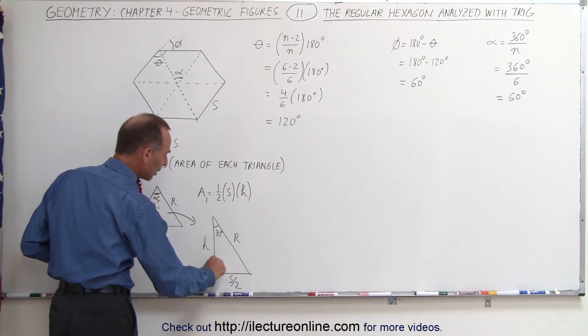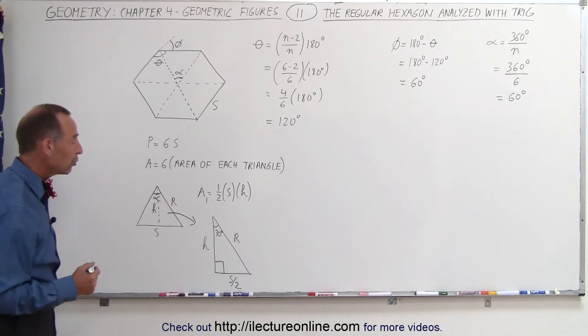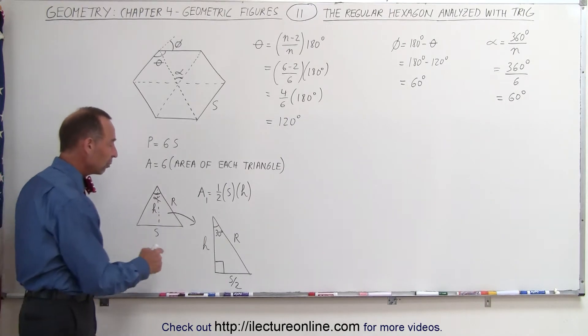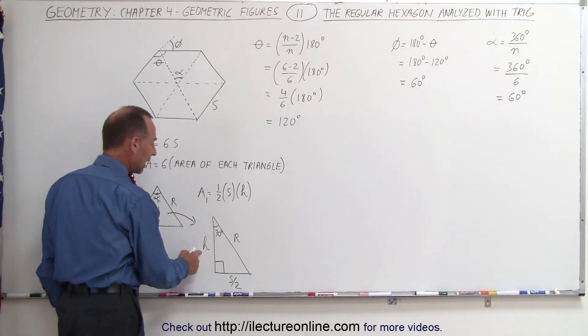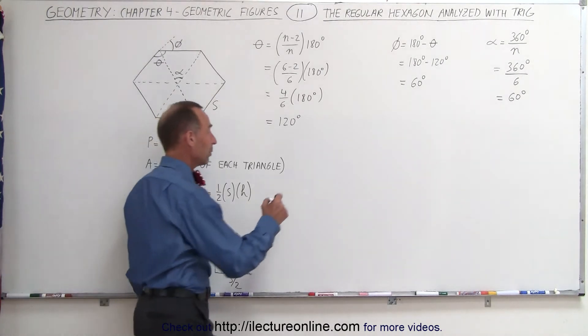Whenever we have a right triangle, we can employ the trigonometric functions. We're going to define a relationship between H and S, and between S and R.